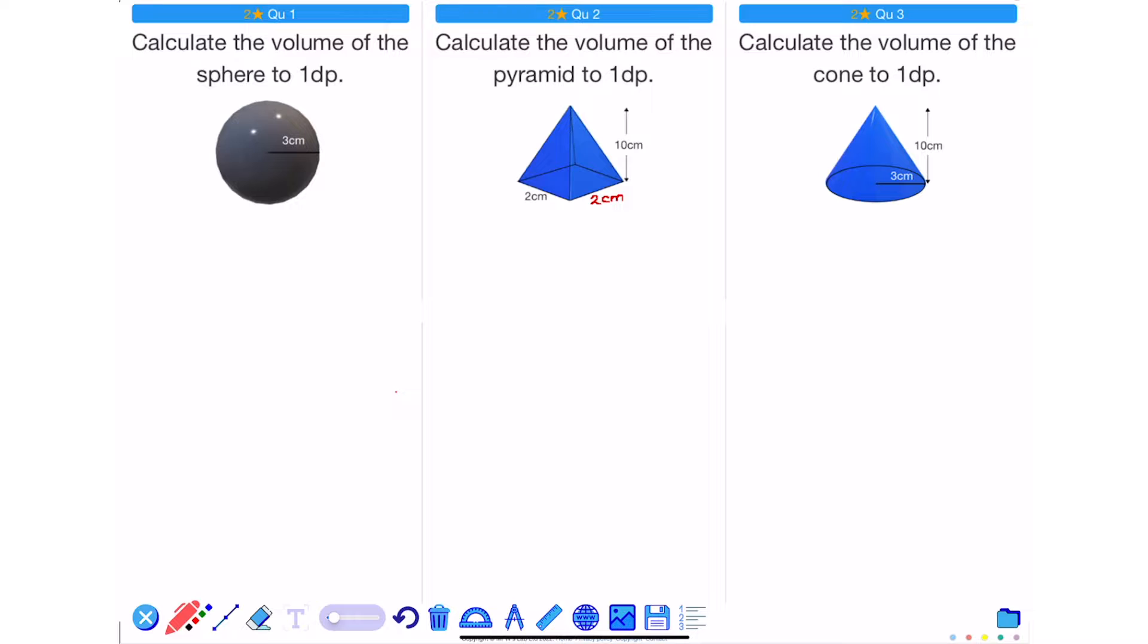To calculate the volume of a sphere, I need to use the formula that the volume is equal to 4 thirds pi r cubed. r is the distance from the center of the sphere to the outside, in this case r is equal to 3.